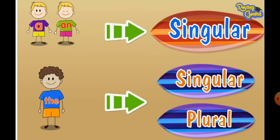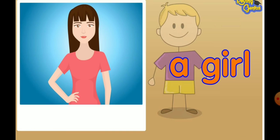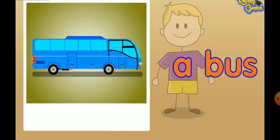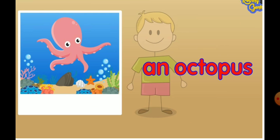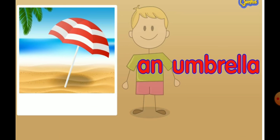A and AN are used with singular nouns, whereas THE is used with both singular and plural nouns. For example: a girl — as you can see in the picture, there is only one girl; a single bus, a single octopus, one umbrella. So here A and AN are used before a singular noun.